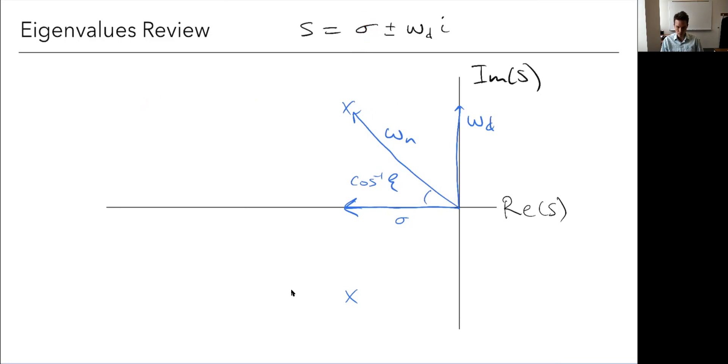So everything on the left half plane is stable. It has a negative component for the real part of my eigenvalue. That means it's going to decay. Eventually, we'll get to zero, it may be a slow decay, but it'll get there eventually. Whereas if this is a positive value, that means that mode is going to be increasing, it's unstable, some disturbance is going to increase in magnitude. So that's the left versus right.